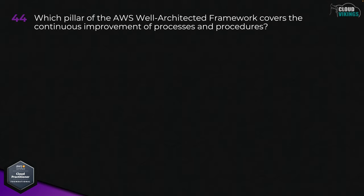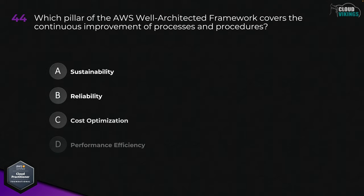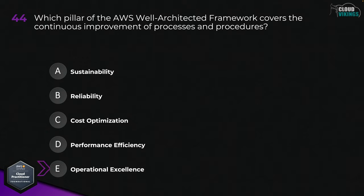Question forty-four: which pillar of the AWS Well-Architected Framework covers the continuous improvement of processes and procedures? Options are: A, sustainability; B, reliability; C, cost optimization; D, performance efficiency; or E, operational excellence. The correct answer here is E, operational excellence.